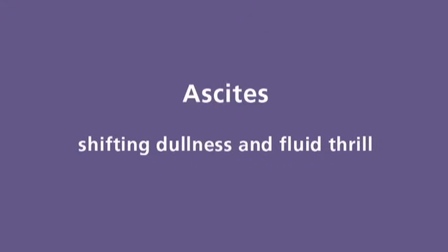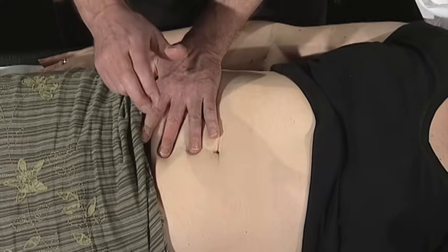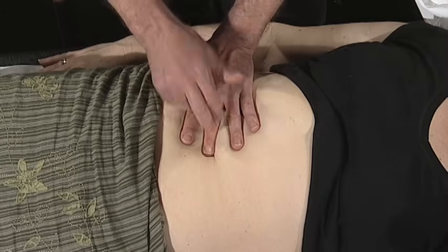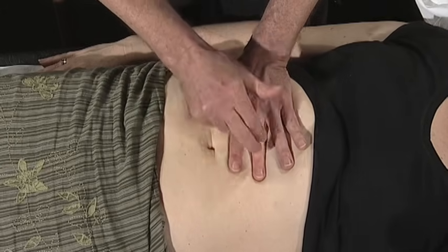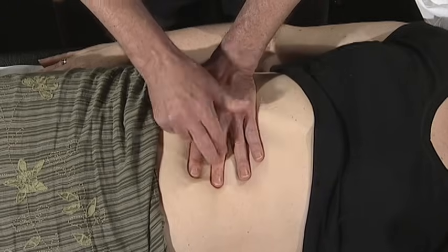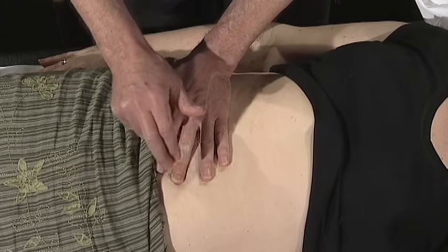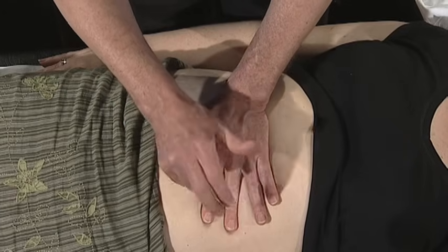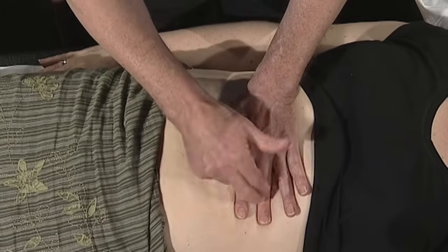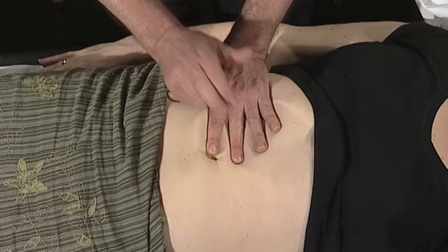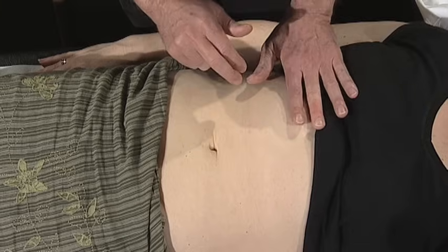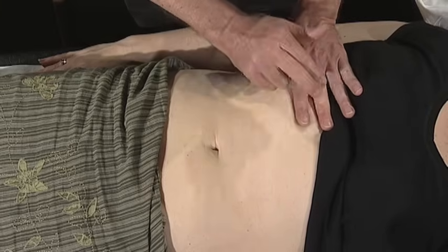If the abdomen is distended and I suspect ascites, I would test for shifting dullness and a fluid thrill. Traditionally, we percuss all nine areas, leaving any tender ones until last, and paying particular attention to any masses you may have felt. I would expect all regions to be resonant, rather than dull.